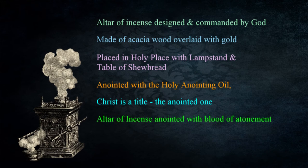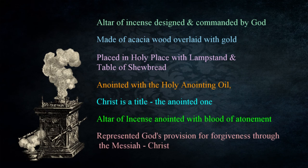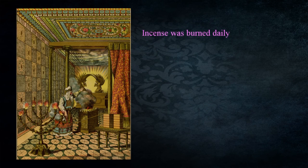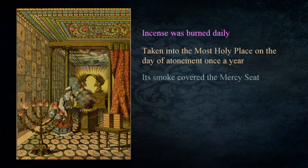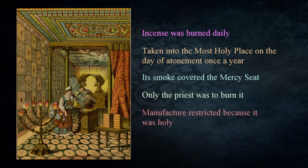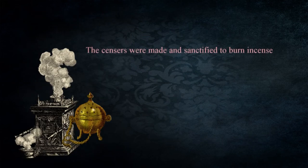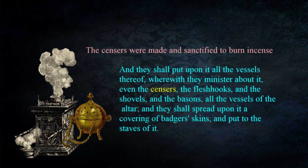The incense was burned daily and was taken into the most holy place on the day of atonement, where its smoke covered the mercy seat. No one but the priest was authorized to burn the incense, and its manufacture was prohibited to anyone else because it was holy. Violations of these limitations brought about catastrophic results when God intervened. We also saw how the censers — objects made and sanctified for use in the tabernacle in Numbers 4:14 — were an extension of the altar of incense. As we focus on these things, we have to direct our attention to the product of the incense as it was burned: the smoke. There are references in the scriptures that provide a figure of what this may represent.